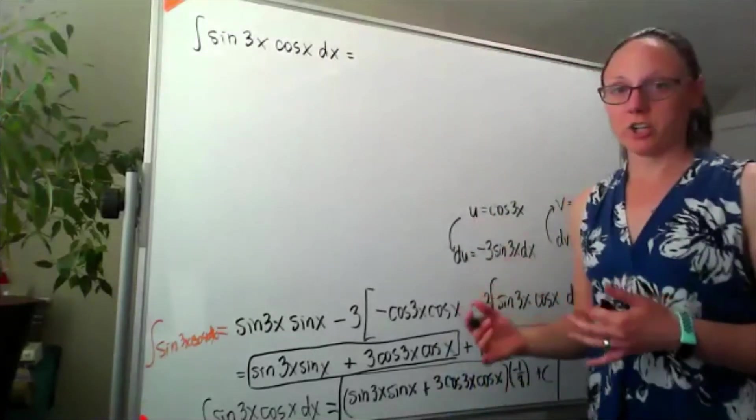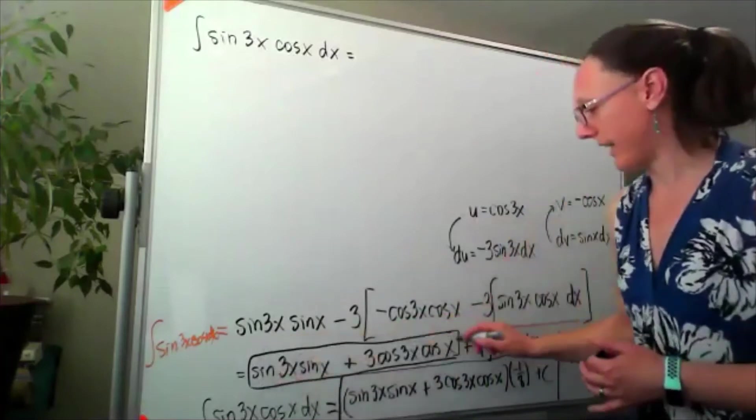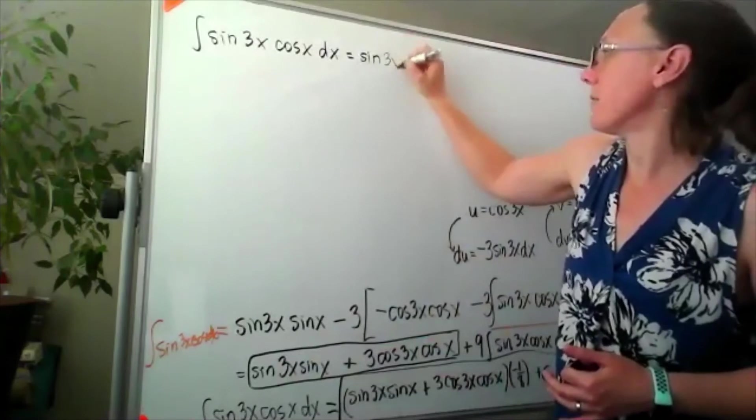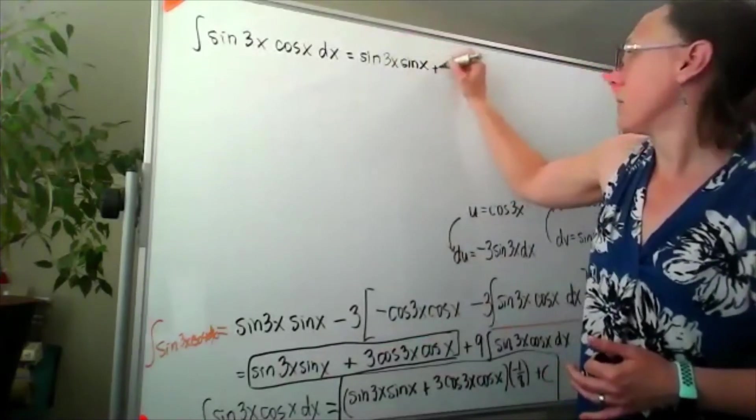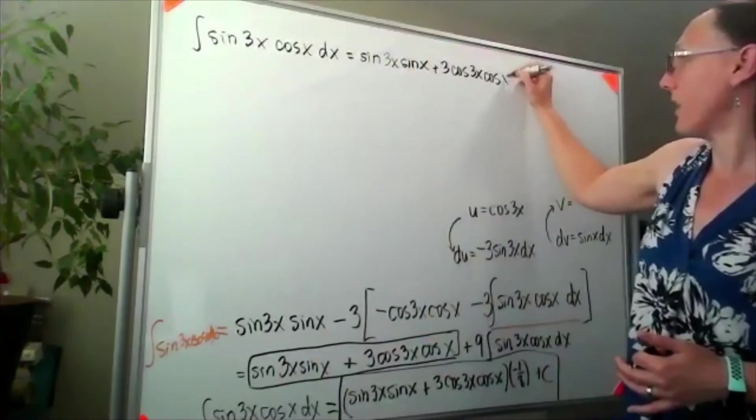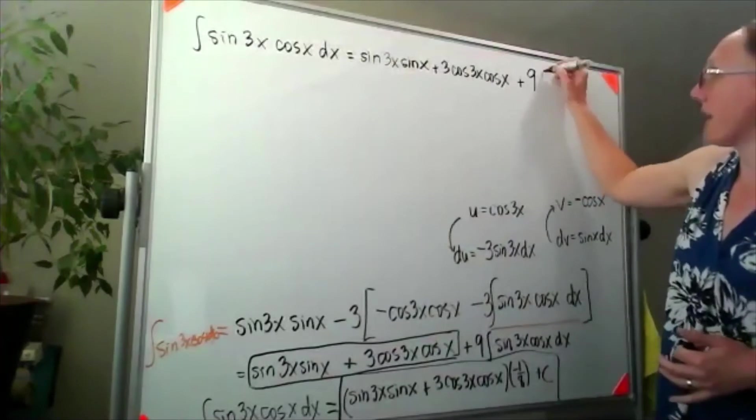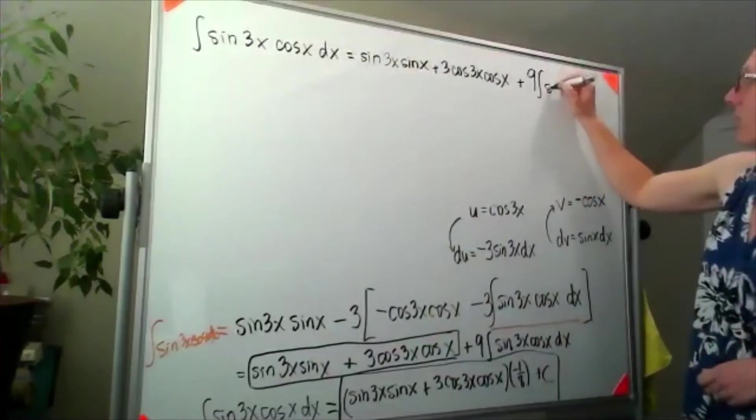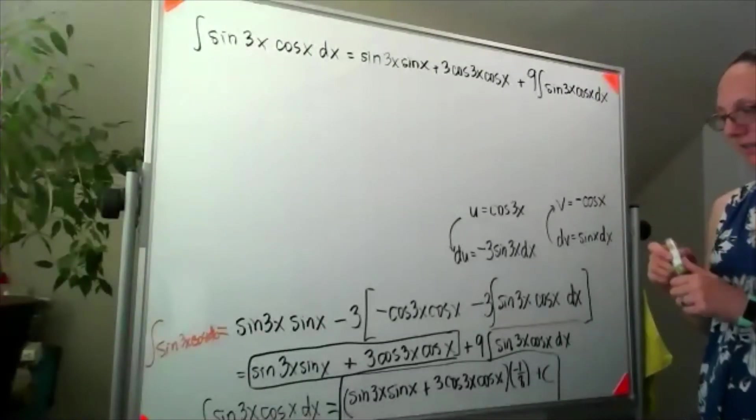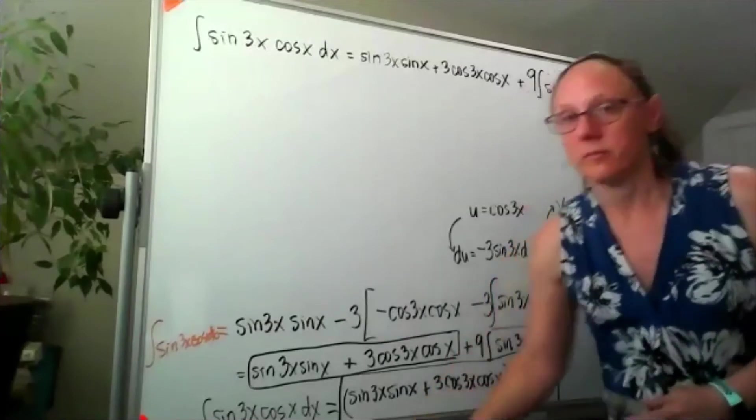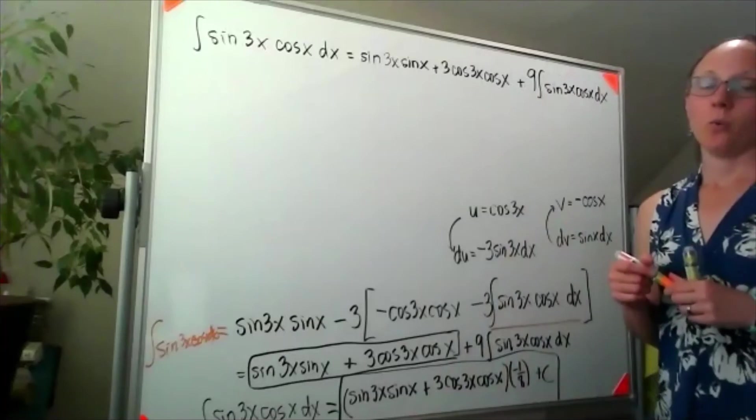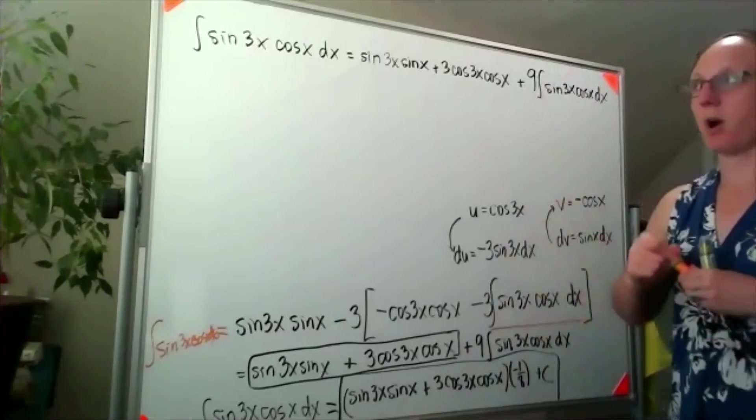We worked some integration by parts and we got this part here in the box - the sine 3x sine of x plus 3 cosine 3x cosine x - plus 9 times the integral of sine of 3x cosine x dx. When we get to this point in the integration by parts, we have exactly this same integral that we started with show up again.